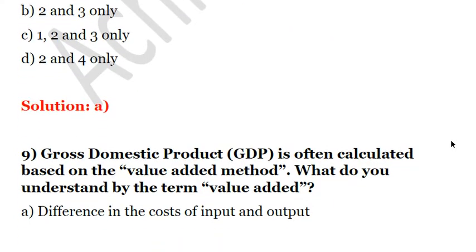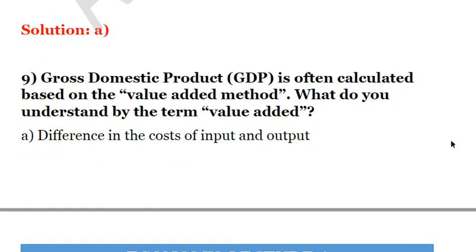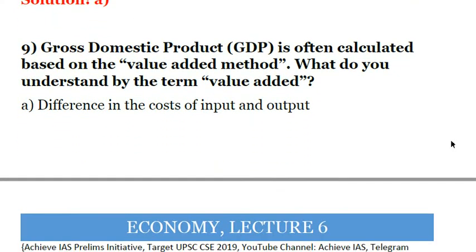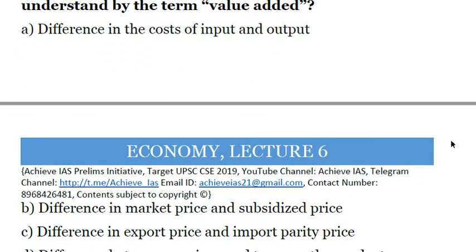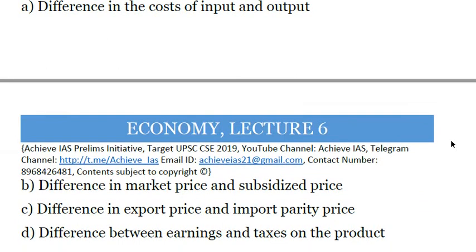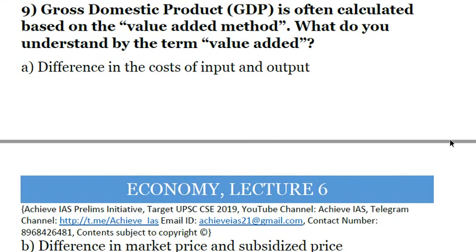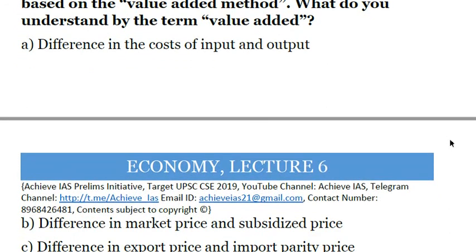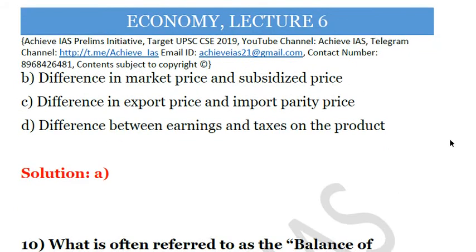Next question: GDP is often calculated based on the value added method. What do you understand by the term value added? A. Difference in the cost of input and output. B. Difference in market price and subsidized price. C. Difference in export price and import parity price. D. Difference between earnings and taxes on the product. The answer is A — difference in the cost of input and output is value added.